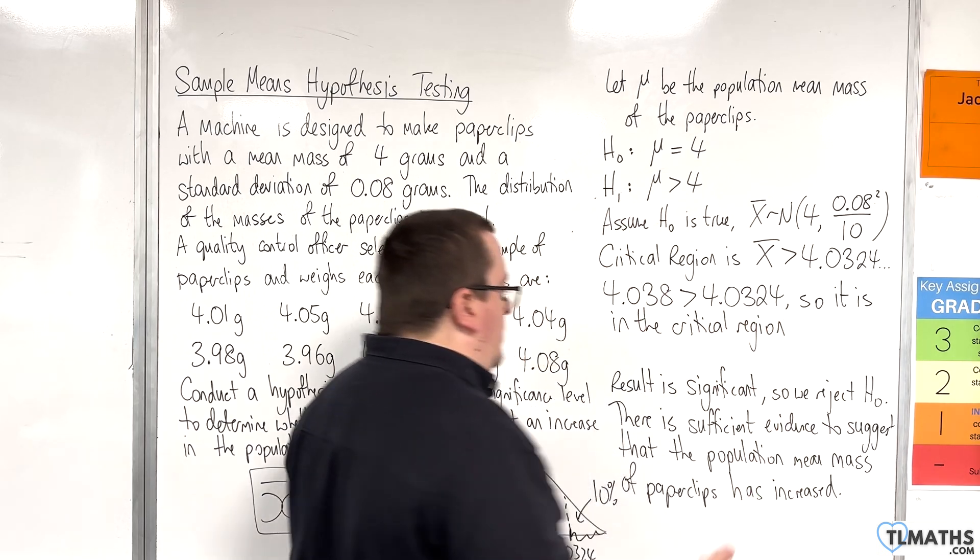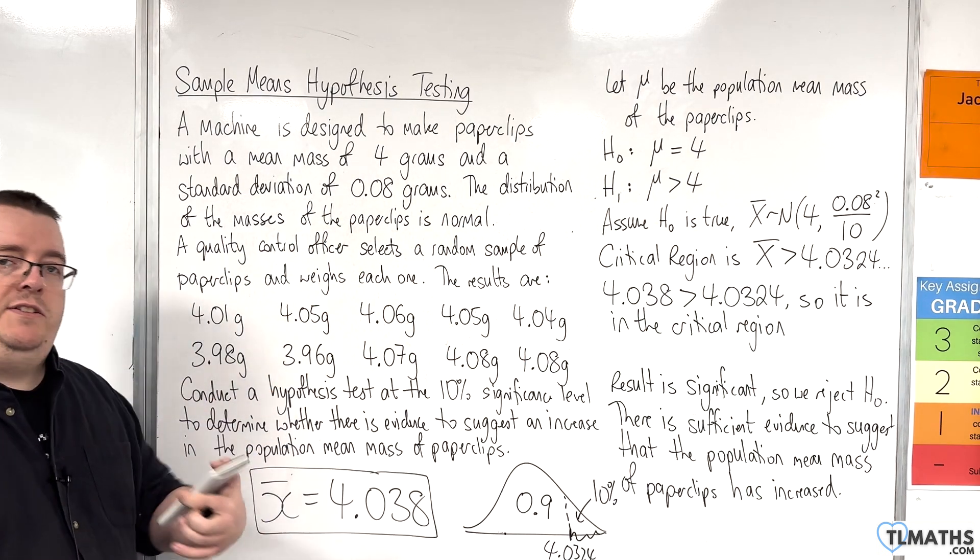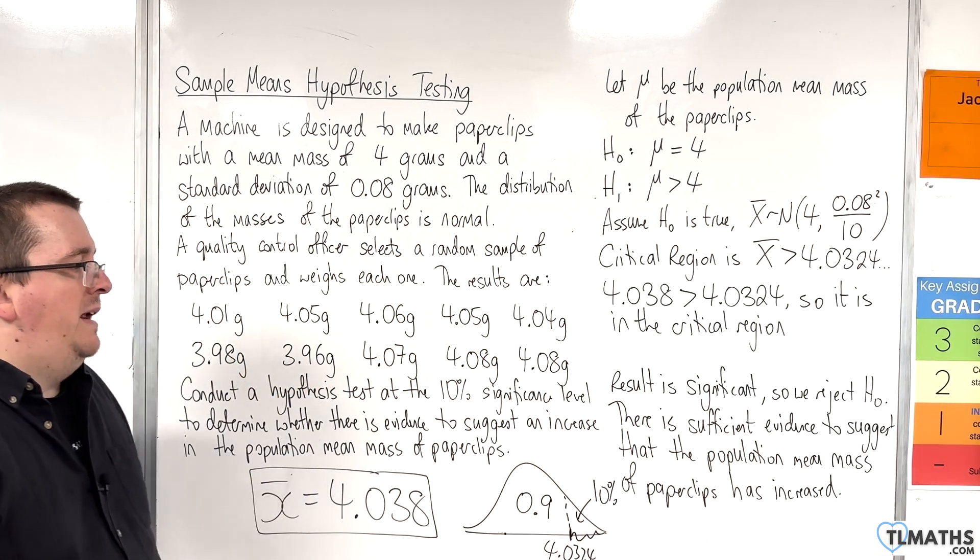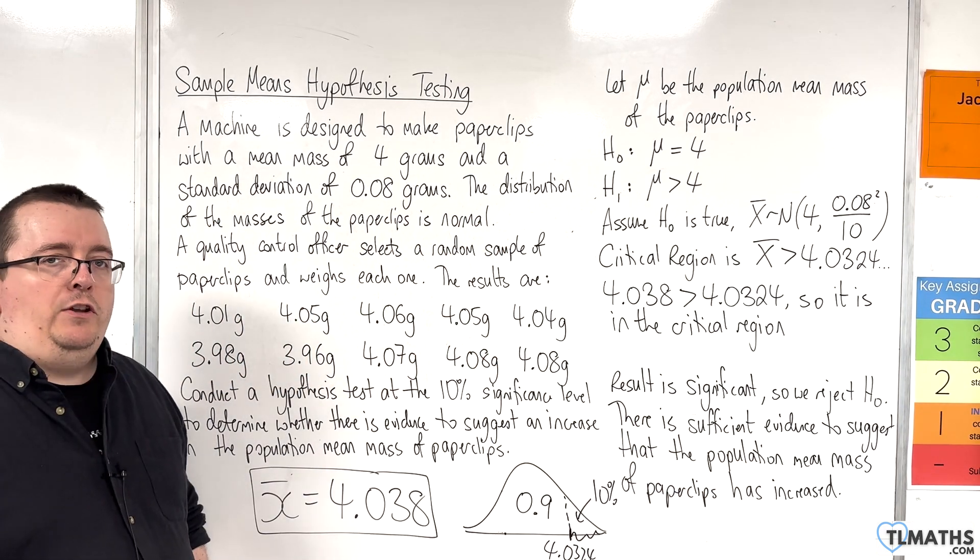And because it's in the critical region, we reject the null hypothesis. So, there is sufficient evidence to suggest that the population mean mass of paperclips has increased.